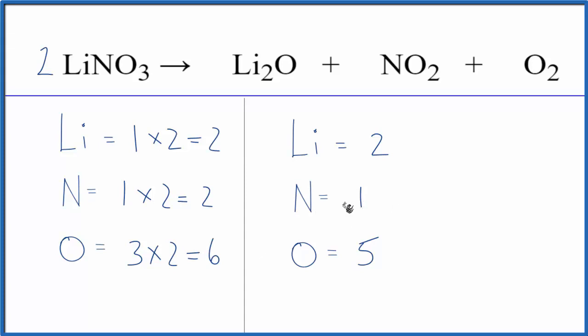Let's do the nitrogens. We could put a two in front of the NO2. One times two, that'll give us two. But then we do need to update the oxygens as well. So now we have one plus two times two is four. So we have five, six, seven oxygens.